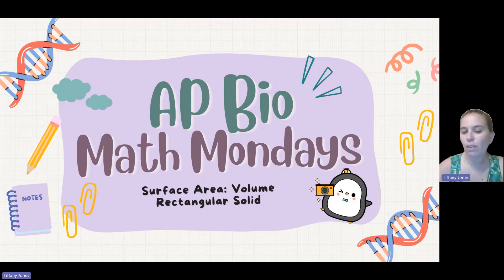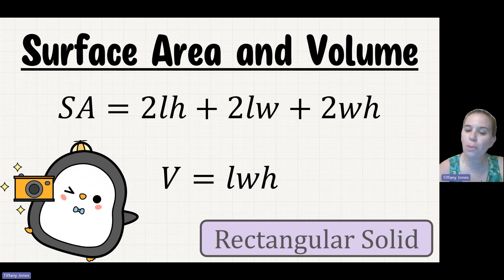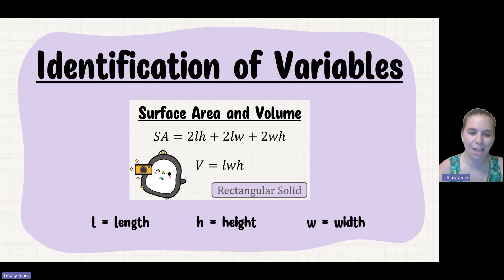Today we're going to look at surface area to volume, specifically looking at a rectangular solid. The formula here is 2 times length times height, plus 2 times length times width, plus 2 times width times height. And the volume is going to be length times width times height. L is length, H is height, and W is width.